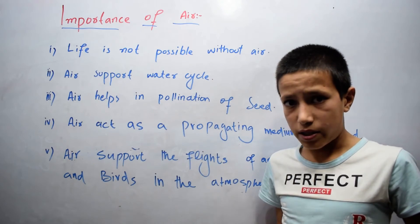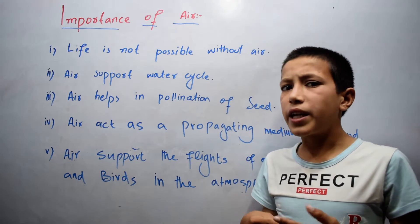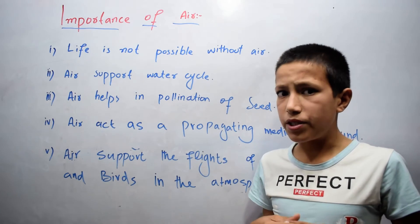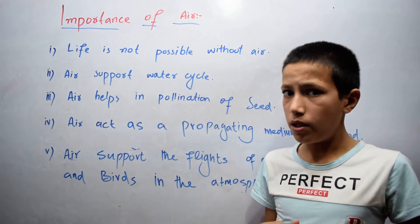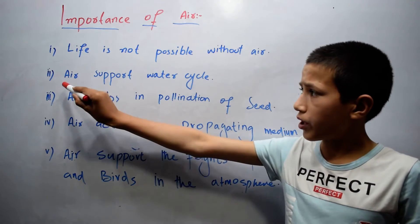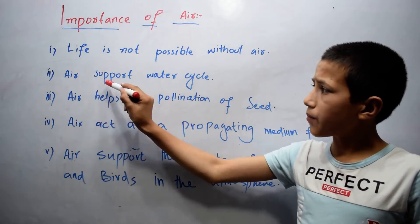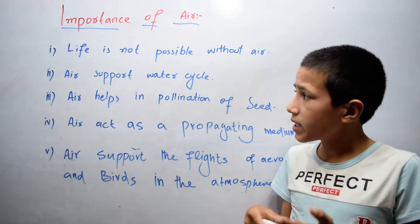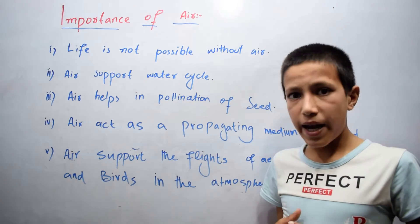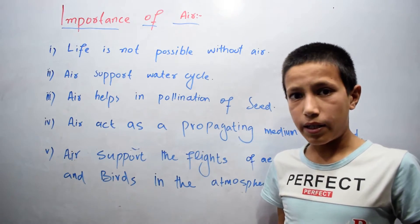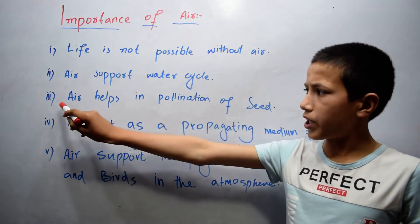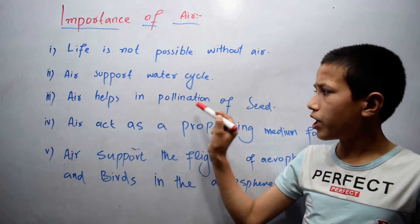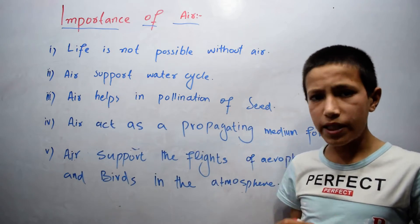The first important point is that life is not possible without air on earth. All living things require air for breathing. The second important point is that air supports the water cycle — the water cycle is supported by air.